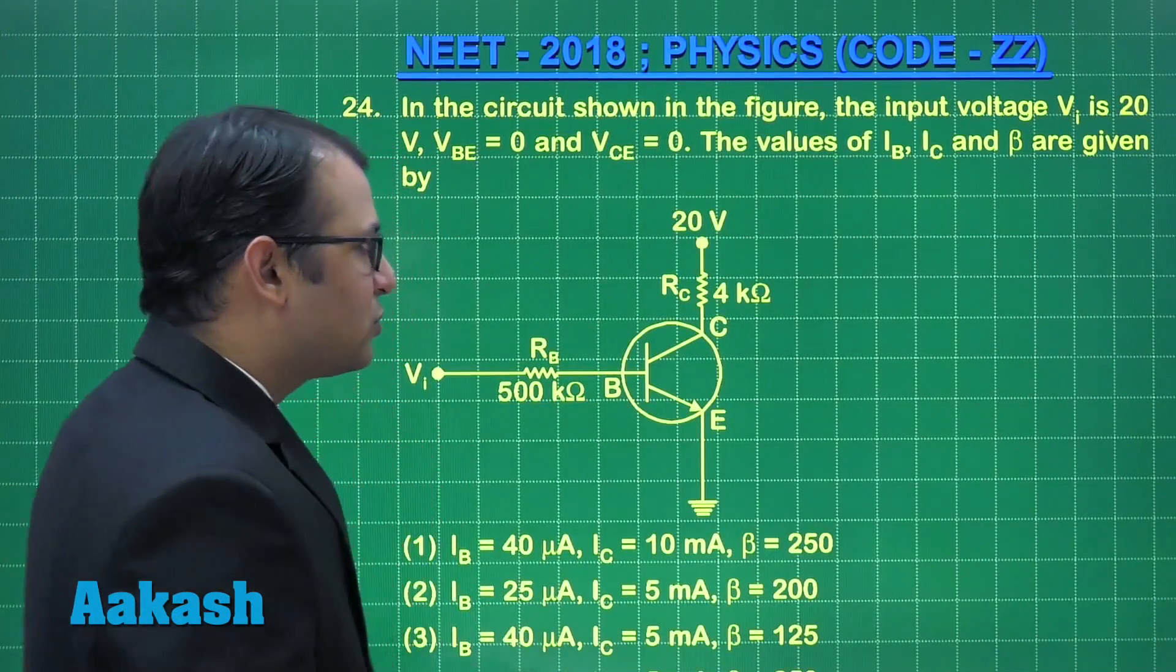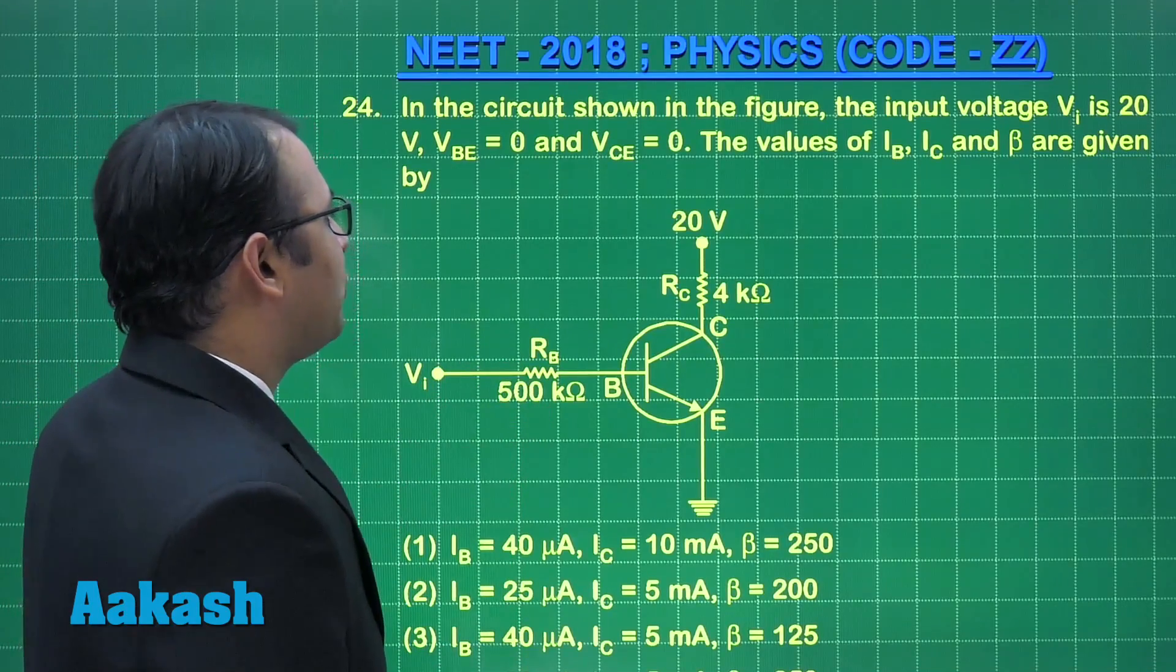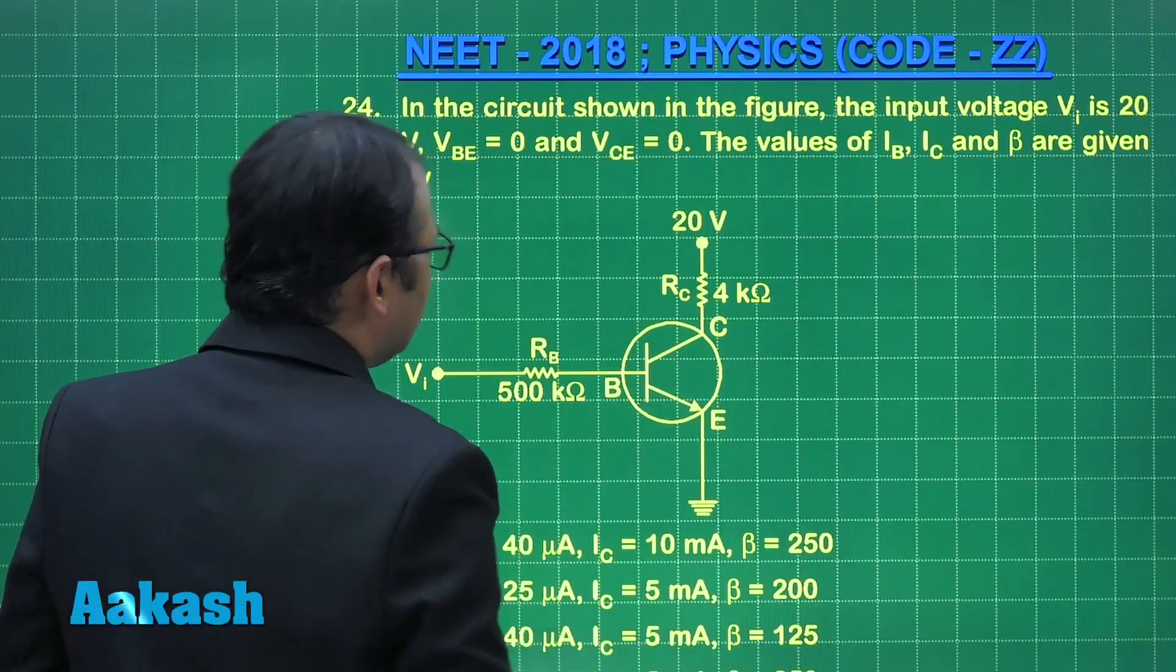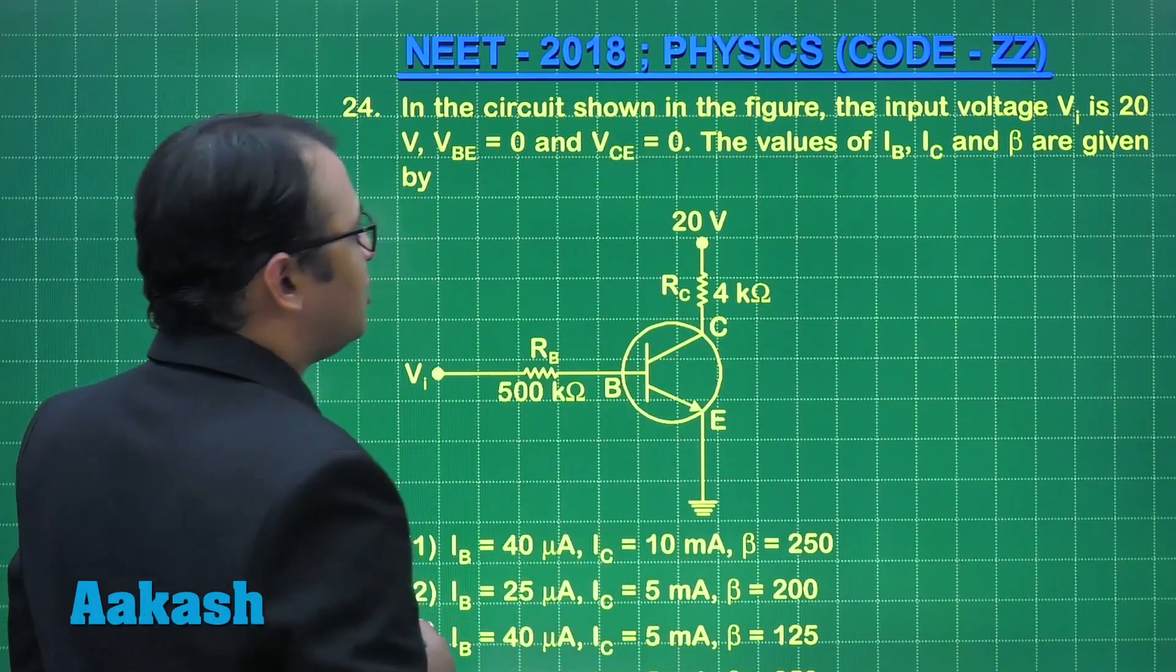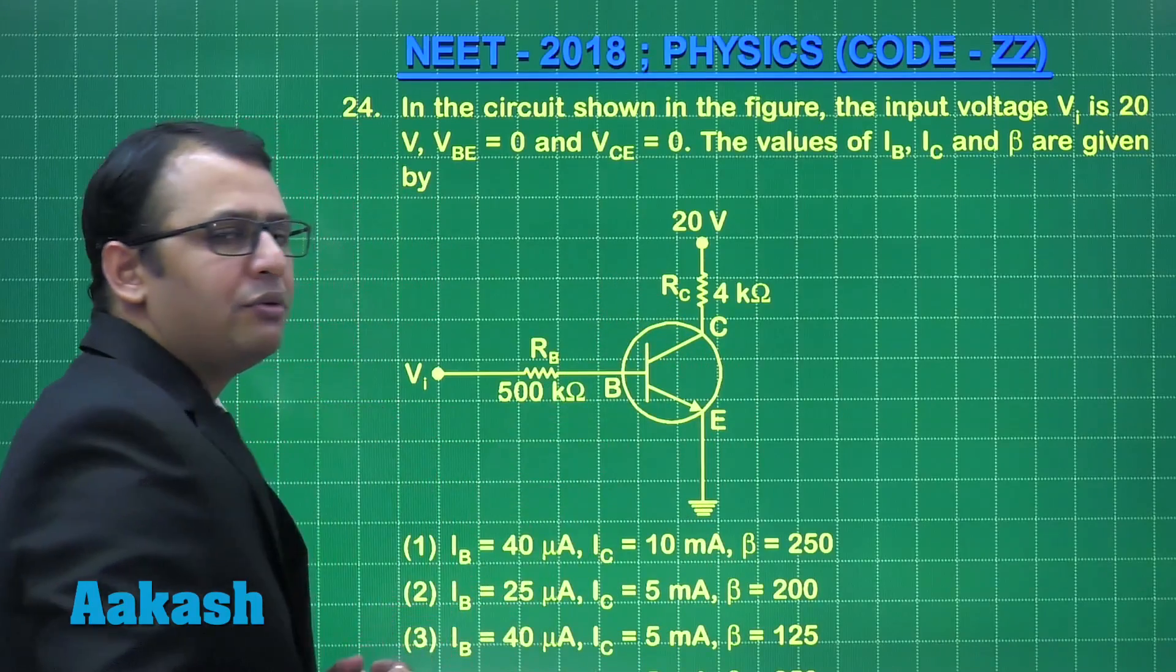Let's start with question number 24. This question belongs to the semiconductor chapter. Here is a circuit shown where the input voltage VI is 20 volts, VB is 0, VCE is 0, and IB, IC, and beta are to be found.